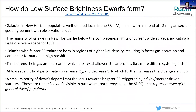New Horizon galaxies populate a well-defined locus in the surface brightness stellar mass plane with a spread of around three mags per arc second squared, in good agreement with observational data. Low surface brightness galaxies form the majority in the dwarf regime, indicating a large discovery space for LSST. Galaxies with fainter surface brightnesses are born in regions of higher dark matter density, resulting in faster gas accretion and more intense early star formation. The stronger supernova feedback flattens gas profiles, creating shallower stellar profiles and more diffuse systems. At low redshift, tidal perturbations accelerate the divergence in surface brightness. A small minority of dwarfs depart toward high surface brightnesses due to merger-driven starbursts but are not representative of the general population. Please follow the archive link for full details. Thank you.